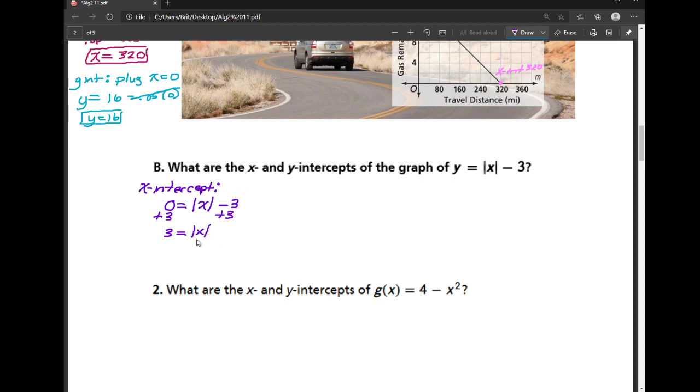So I get 3 is equal to the absolute value of x. Just a little bit of a reminder with an absolute value. You get rid of the absolute value symbol by putting a plus or a minus on one side of the equation. So I'm going to say positive and negative 3 is equal to x. So there's actually two x-intercepts here if I were to graph this.